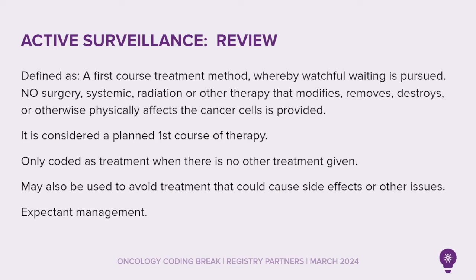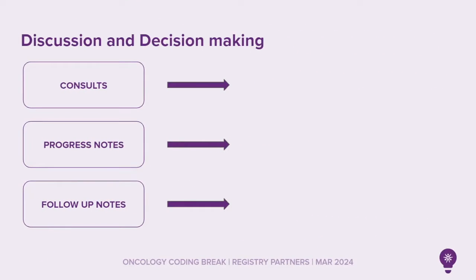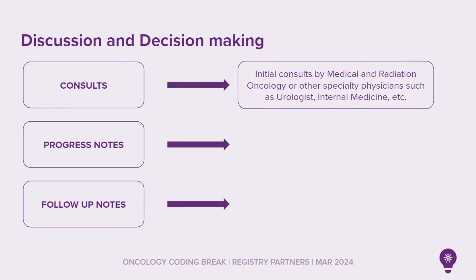Active surveillance may be used in certain types of prostate cancer and in some other types of cancer as well. Initial consults by medical and radiation oncologists or other specialty physicians, such as the urologist or internal medicine, may provide some initial treatment options, including active surveillance.